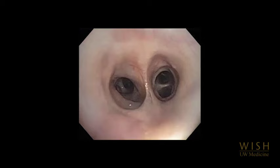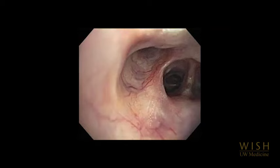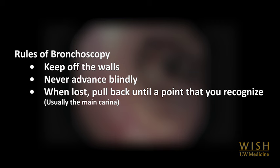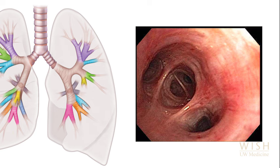These airways are inspected so that the subsegmental carinas have been viewed, and then the bronchoscopy is complete. There are a number of normal variations in the anatomy of the airways, and you will become familiar with these as you practice. In this presentation, we have demonstrated the most common airway anatomy and illustrated the rules of bronchoscopy: keep off the walls; never advance blindly; when lost, pull back until the point that you recognize; and use medications to reduce cough.